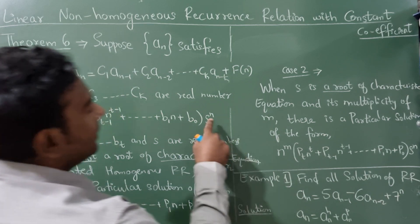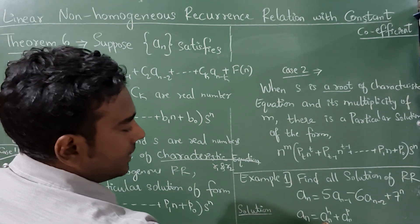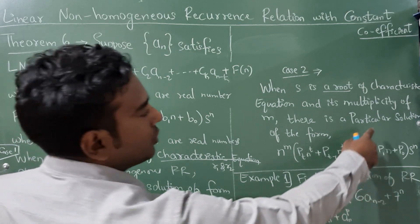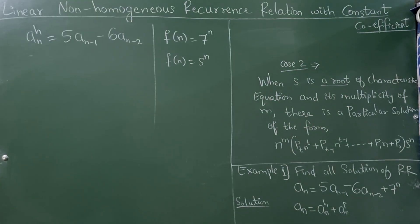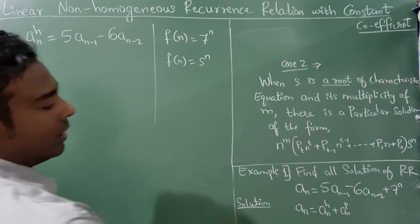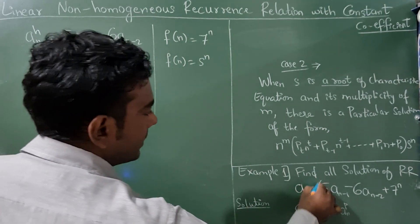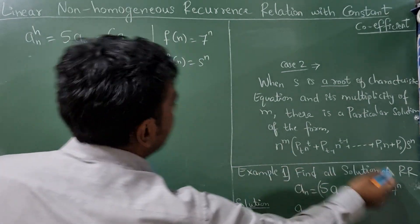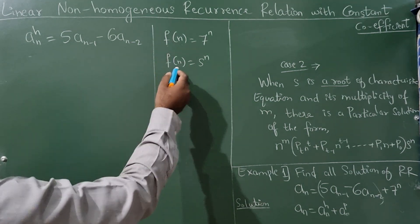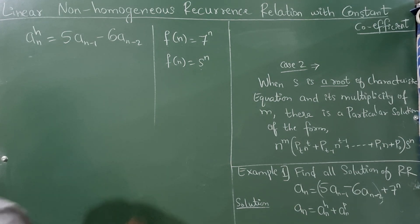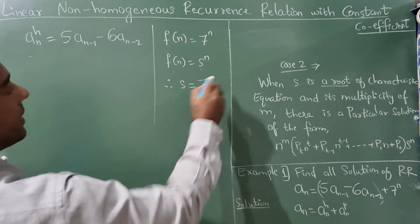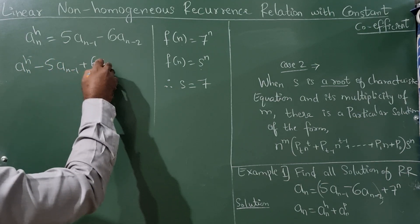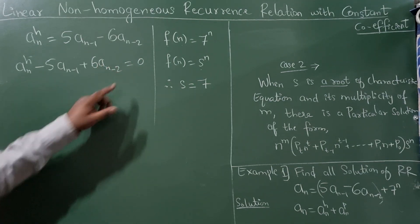You can see this 7^n is the s^n term here. Now a(n) = a(n) homogeneous + a(n) particular. For the homogeneous part, we have a(n) = 5·a(n-1) - 6·a(n-2), and f(n) = 7^n so s = 7. Taking terms to the left-hand side: a(n) - 5·a(n-1) + 6·a(n-2) = 0. The degree is 2.